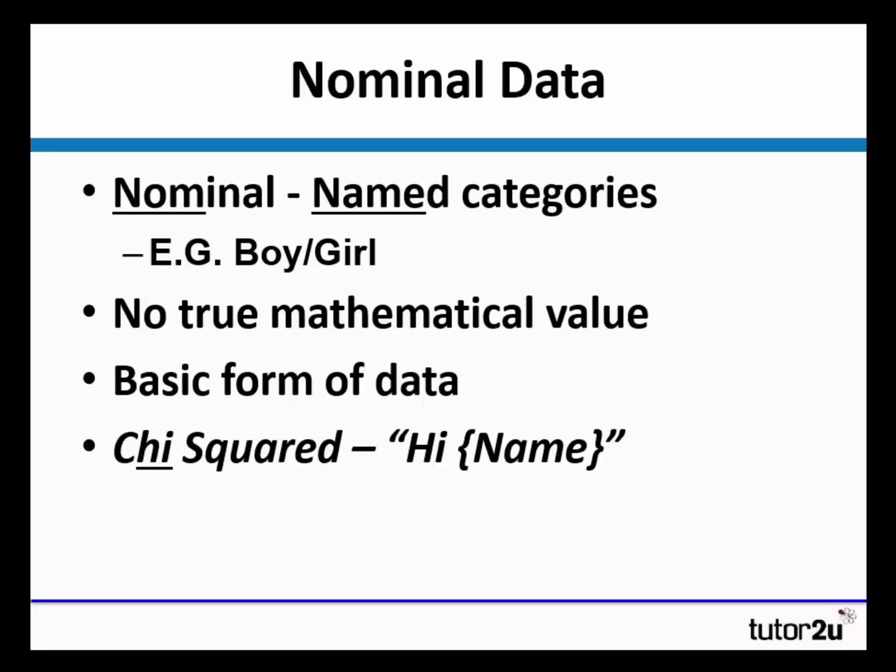Nominal data is named categories, and the way in which we remember this is that the word nom is French for name. For example, our categories may be male, female, girl, boy, tall, small, aggressive, non-aggressive.